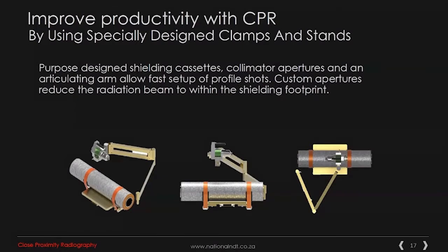The purpose-designed shielding cassettes, collimator apertures, and an articulating arm allow for fast setup for profile shots, utilized in corrosion monitoring programs. The custom apertures allow for reduction of the radiation beam to within the shielded footprint of the cassette area, allowing us to minimize radiation in the surrounding area and focus the beam in a specific direction — as opposed to conventional radiography where radiation impact is spherical from the point of source.